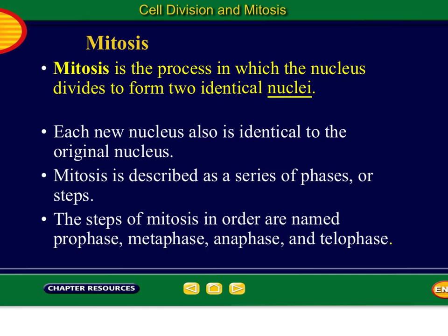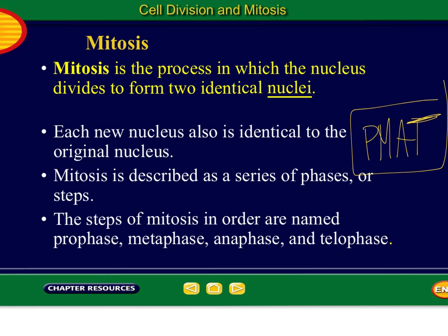Mitosis is the process in which the nucleus divides to form two identical nuclei. So for big letter C, mitosis is the process in which the nucleus divides to form two identical nuclei — put that in the blank. Nuclei is plural for nucleus. Please highlight 'mitosis.' Each new nucleus is also identical to the original nucleus. Mitosis is described as a series of phases or steps — in order: prophase, metaphase, anaphase, and telophase. In the margin, please write this acronym: PMAT. That's how I remember the phases in order.